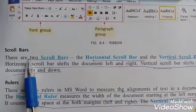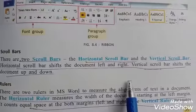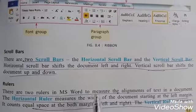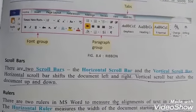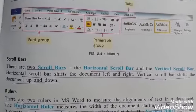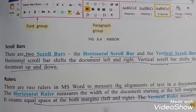Next one is Scroll Bar. There are two scroll bars: Horizontal Scroll Bar and Vertical Scroll Bar. Horizontal Scroll Bar shifts the document or moves the document left and right. Vertical Scroll Bar moves the document up and down.